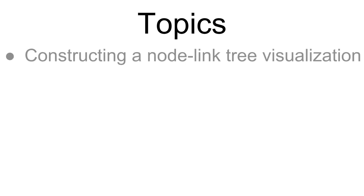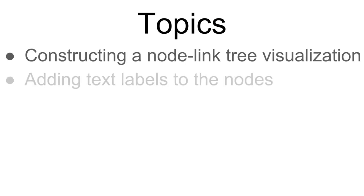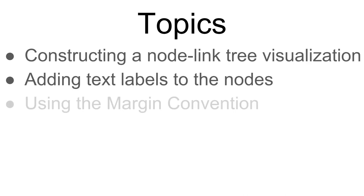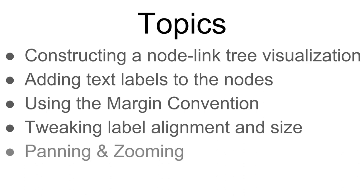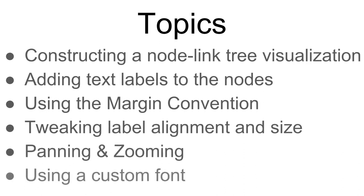The topics we're going to cover here include constructing a node-link tree visualization, adding text labels to the nodes, using the margin convention, tweaking label alignment and size, panning and zooming, and finally using a custom font.